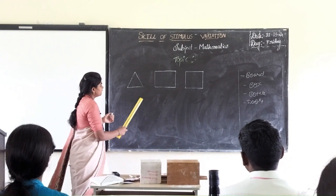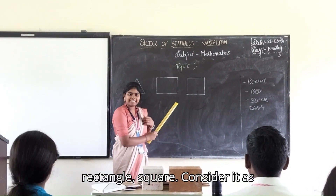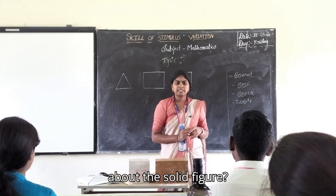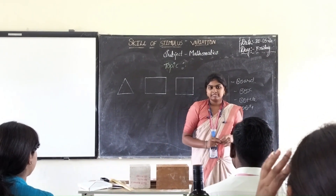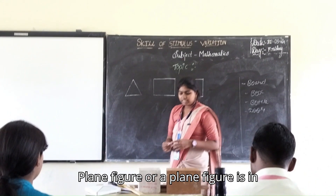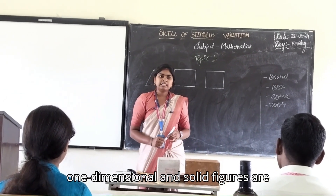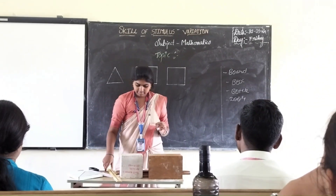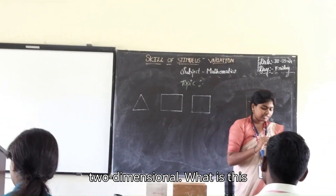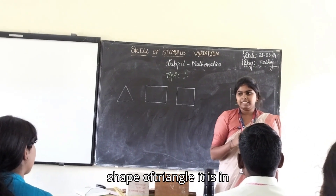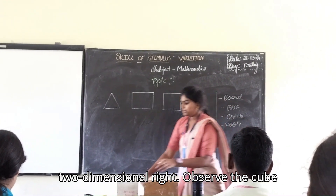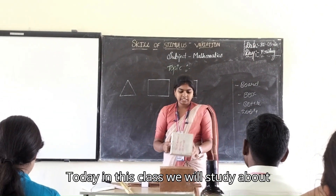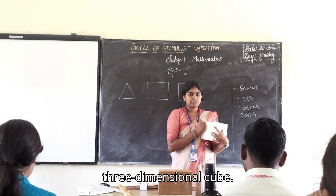Observe here — triangle, rectangle, square. Consider it as a rectangle. Triangle, rectangle, square — these are plane figures. What do you know about the solid figure? Plane figures are two dimensional and solid figures are three dimensional. What is this? Shape of a triangle. It is two dimensional, right? Observe the cube — it is three dimensional.